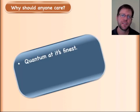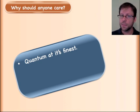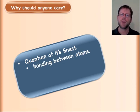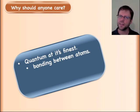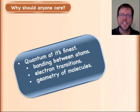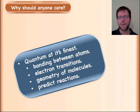So why should anybody care about this? This is quantum at its finest — the idea that you have one valid energy level, then an invalid one, then another valid one — stepping stones. If you can understand this stuff, all of a sudden you can understand bonding between atoms via constructive interference of waves, electron transitions — meaning you can know why certain fireworks are certain colors — the geometry of a molecule and whether it's polar or non-polar, and you can predict reactions.